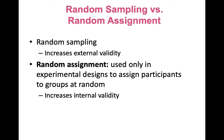For example, you could use a convenience sample — like college students in introductory psychology — who participate in an experiment where people are randomly assigned to conditions. That would be a matter of internal validity. We could say that situation has high internal validity, but not necessarily strong external validity.